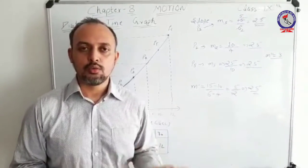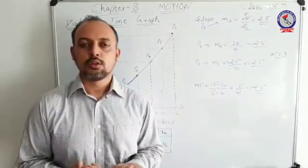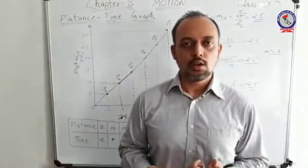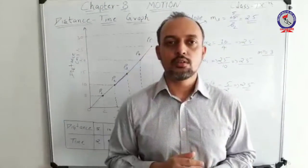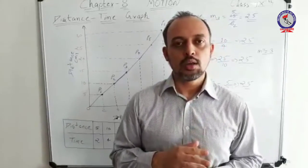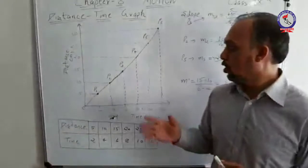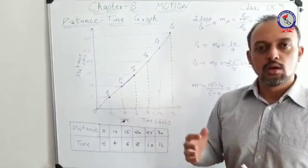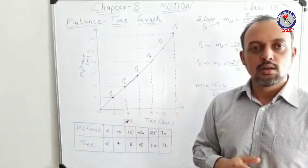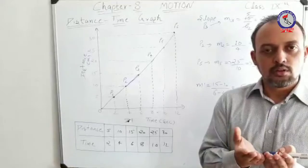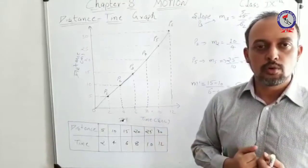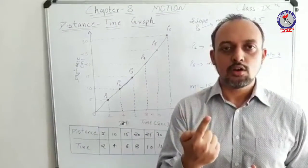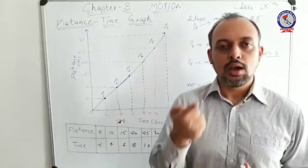So, the concept of distance-time graphs has two basic significances. The very first significance is that with the help of the slope, you can calculate the speed at any given instant. At each point you can calculate a different value of slope, and at each slope you will get a different value of speed. If the speeds are uniform, it represents uniform motion. The slope at any instant of time represents the value of speed at that particular instant.